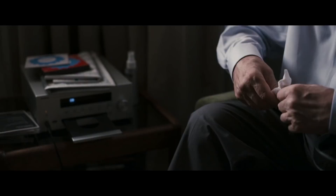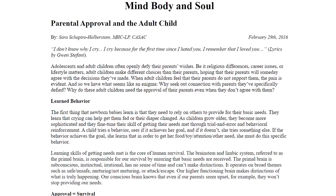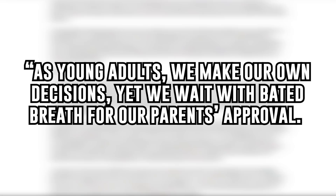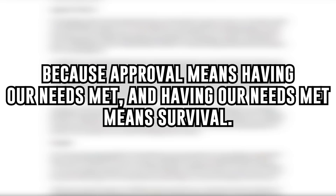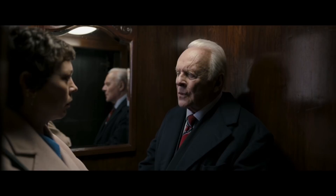Theme number two: parental approval. While watching this movie, I kept thinking about the idea of why we care so much about what our parents think of us, even when we become adults. In an interesting article by psychotherapist Sarah Shapiro Halberstam, we get the psychology of it nicely broken down. As young adults, we make our own decisions, yet we wait with bated breath for our parents' approval. Why? Because approval means having our needs met, and having our needs met means survival. Though we are adults and are able to get what we desire on our own, our primal brain never grows up. This explains so much about us as adults, including Anne in this film.